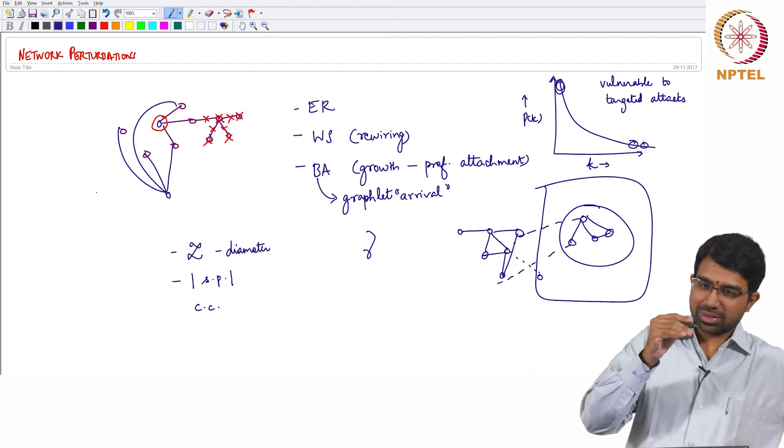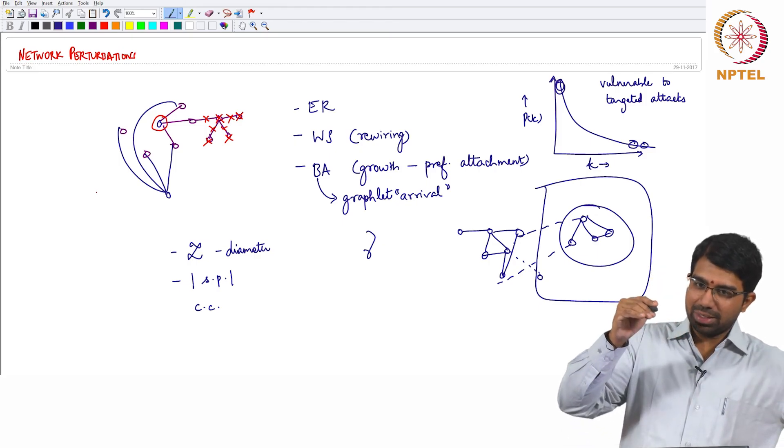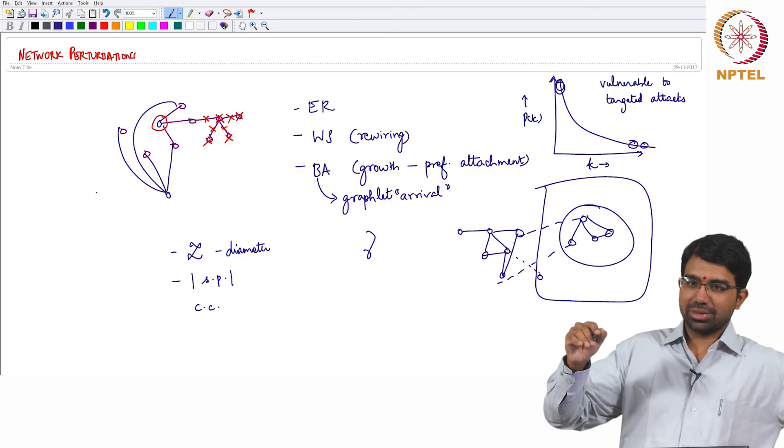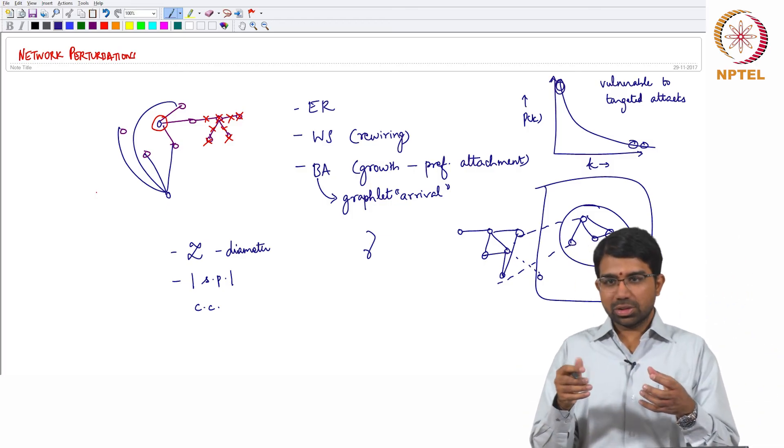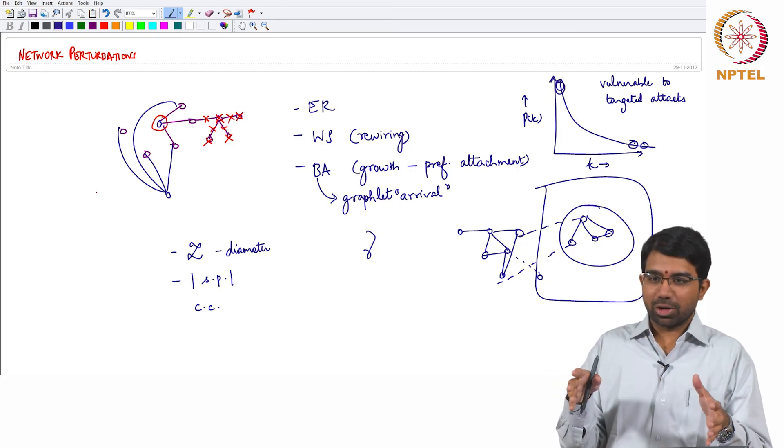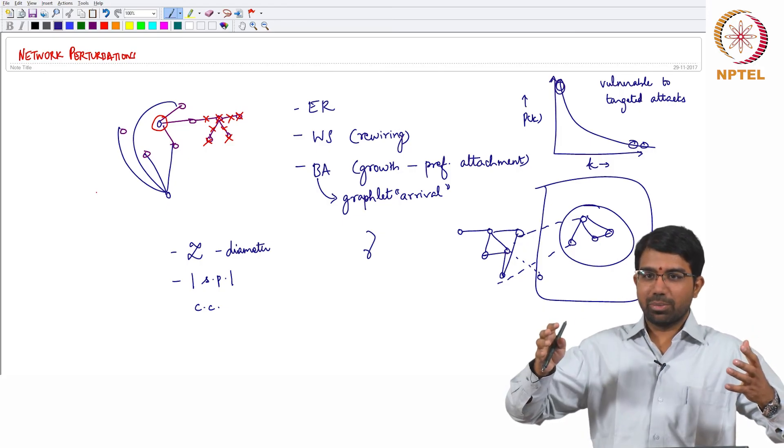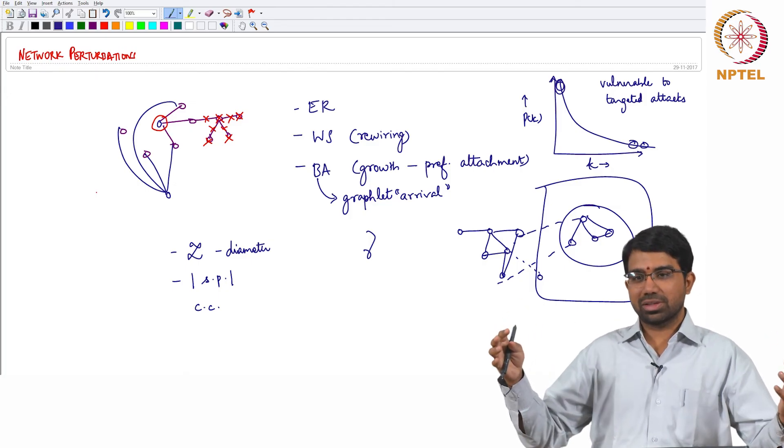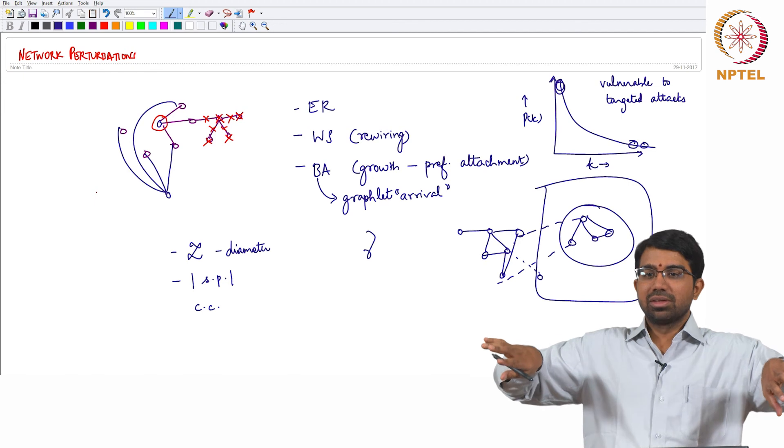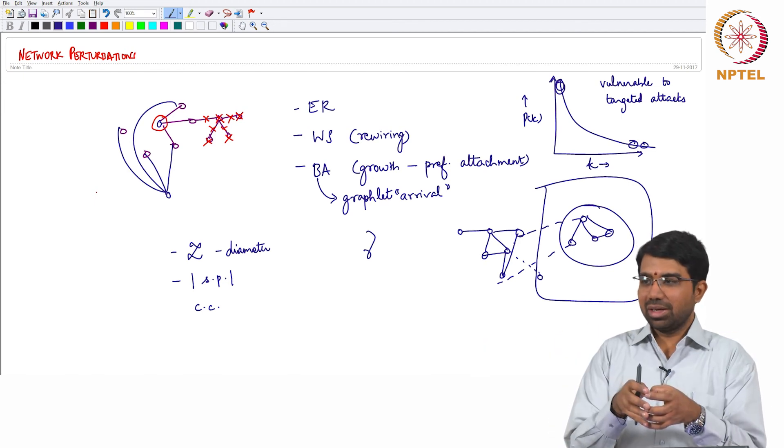What will happen is the characteristic path length will slowly increase and then start decreasing. Initially when you start knocking out a few nodes, your components haven't yet broken down, you still have some bigish components and those components are getting poorer and poorer connections. After that it becomes islands, and then it kind of decreases.